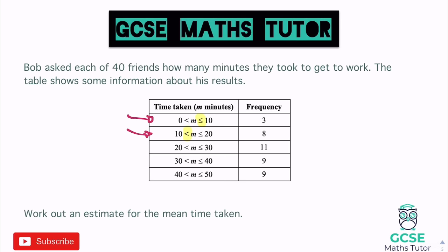With grouped data, we don't know the exact times within each group. Someone in the 0 to 10 category could be 4 minutes 50 seconds - anything within that range. Because we don't know exact times, the question says 'work out an estimate for the mean.' To estimate, we use the midpoint of each group as our best guess. The midpoint of 0 to 10 is 5, the midpoint of 10 to 20 is 15, 20 to 30 is 25, and so on.